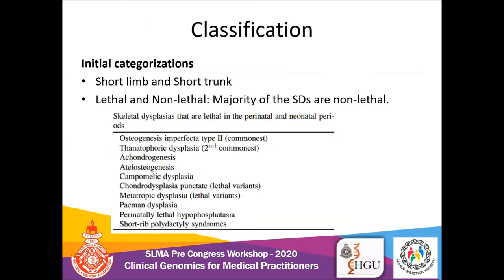There have been multiple attempts to classify these disorders. Before 1970, this group of disorders were categorized according to their presentation — short stature was classified into short limb and short trunk, likewise lethal and non-lethal skeletal dysplasia. A majority of these skeletal dysplasia are non-lethal. Osteogenesis imperfecta type 2 is the commonest lethal type, and thanatophoric dysplasia is the second commonest, usually presenting as stillborn babies or dying soon after birth from respiratory failure.